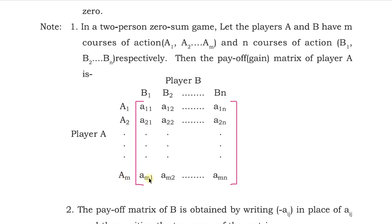The strategies employed by the respective players are a1, a2, up to am for player A, and b1, b2, up to bn for player B. You write the maximum of each column — the maximum of column one, column two, and so on up to column n. Then out of those column maximums, you select the minimum value — that gives you the minimax.